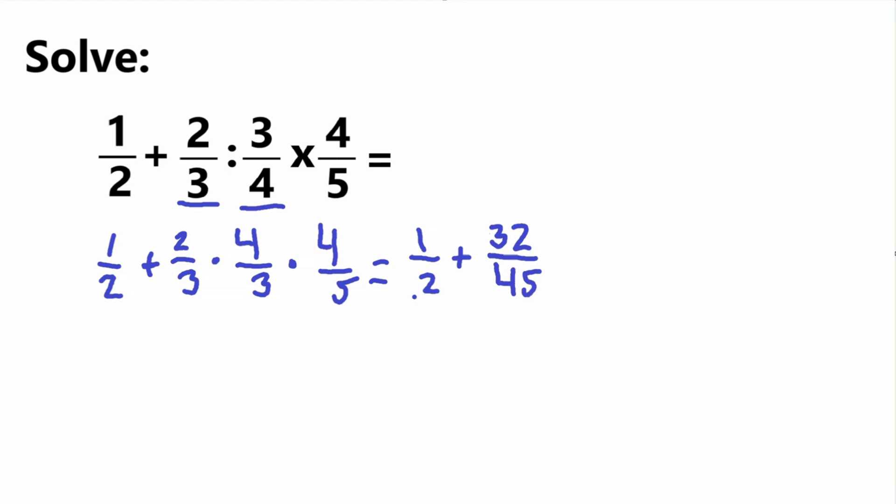Now we're just left with two more terms, 1 half and 32 over 45, so now we need to add the fractions together. So how do you add fractions together? Well, to add fractions together, you need to find a common denominator, so you need to multiply both the denominators so they become the same.